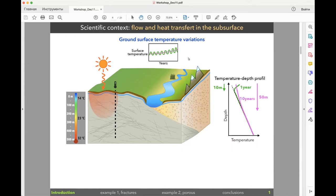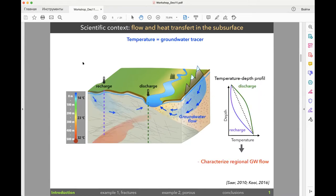Longer term variations can propagate to greater depth. We also have groundwater flow that will completely redistribute all the temperatures. In recharge zones we have cold water that can infiltrate. In discharge zones we have relatively warm water of deeper origin that goes up to the surface. We will see this if we measure temperature profiles. The temperature profiles in these zones will basically deviate from the geothermal gradient.